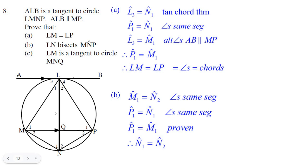That this line LN bisects this angle. Well, that's what it means. Therefore, LN bisects MNP.